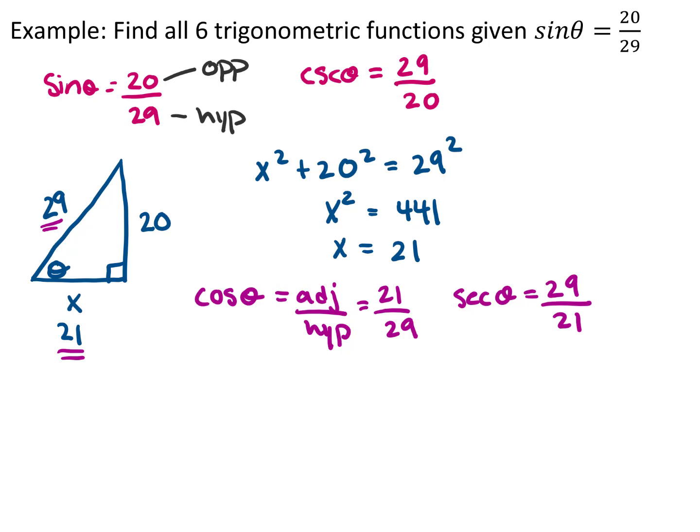And the last one, tangent, is opposite over adjacent. So we have opposite is 20, adjacent is 21. So then we also have cotangent, which is the reciprocal, which is 21 over 20. And now we have all six.